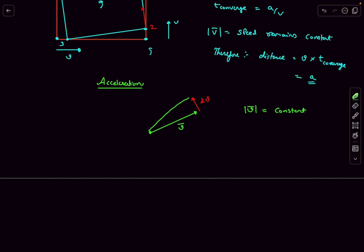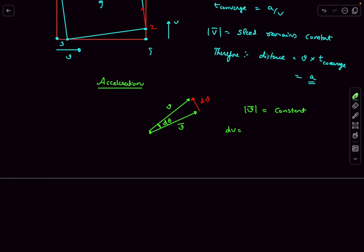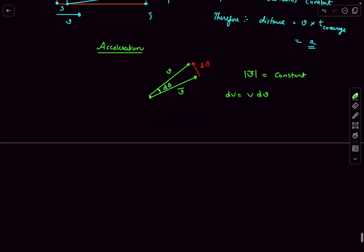The change in velocity after dt must be perpendicular to our velocity vector. Calling it dv, the final velocity vector equals initial plus change. Since magnitude is constant and the angle rotated is dθ, using the arc length formula: dv = v·dθ. Dividing both sides by dt gives dv/dt = v × (dθ/dt), where dθ/dt is the rate at which the velocity vector is rotating.